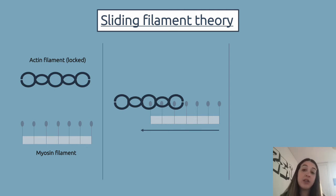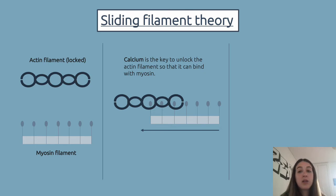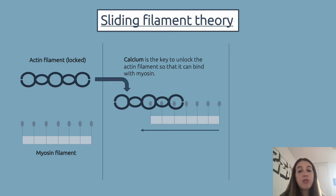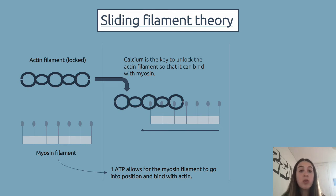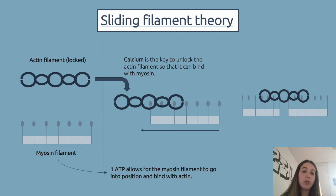Normally the actin filaments are locked so they can't bind with the myosin filaments, and that's where calcium comes in. Calcium is normally stored in the muscle cells and when it's time for muscle contraction, calcium is released — it is the key to unlock the actin filaments. Meanwhile, we also need one nucleotide of ATP that allows the myosin filaments to go into position and bind with the actin filaments and pull those in.